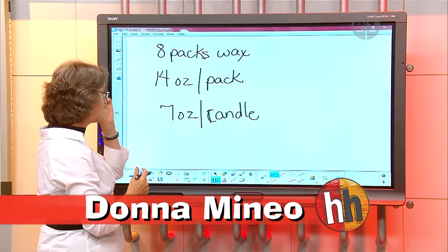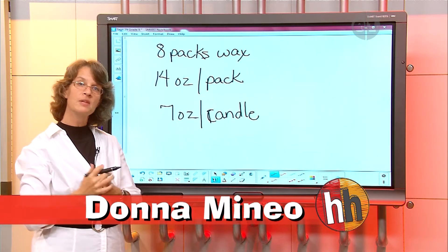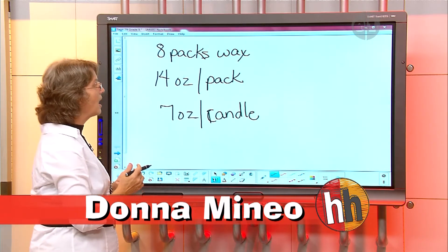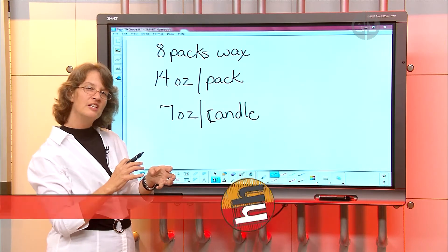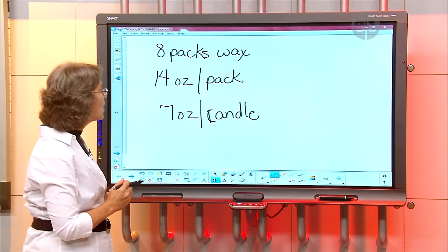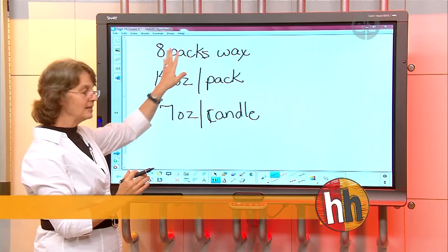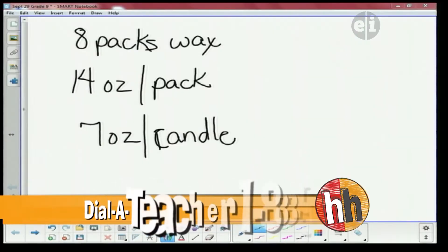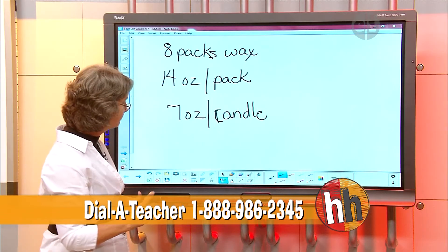How many candles can she make? Okay, this is a two-step problem. By the looks of it, it looks like you're working on division and multiplication together. So we have eight packs of wax, 14 ounces in each pack, but we can only use seven ounces in every candle, correct? Yes.